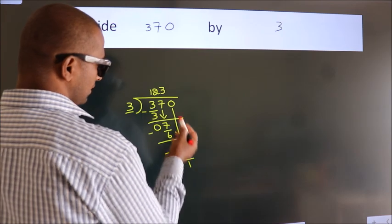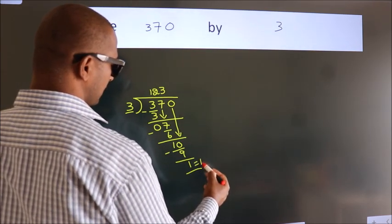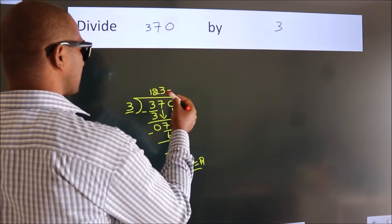After this, no more numbers to bring it down. So, we stop here. This is our remainder. This is our quotient.